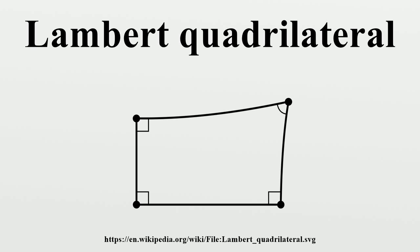A Lambert quadrilateral can be constructed from a Saccheri quadrilateral by joining the midpoints of the base and summit of the Saccheri quadrilateral. This line segment is perpendicular to both the base and summit, and so either half of the Saccheri quadrilateral is a Lambert quadrilateral.